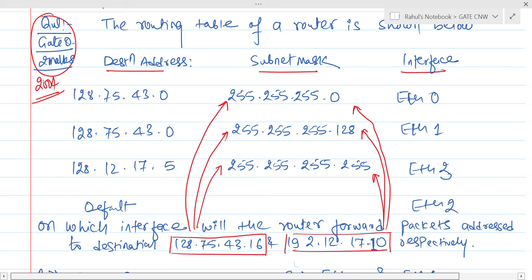So if you are going to perform bitwise AND operation between 128.75.43.16 and 255.255.255.0, we are going to get 128.75.43.0.